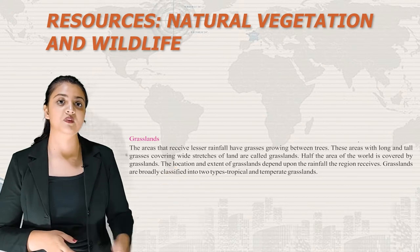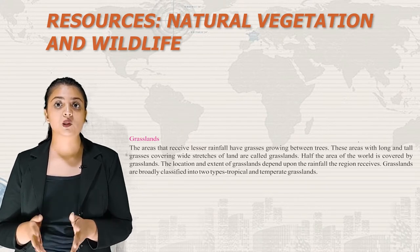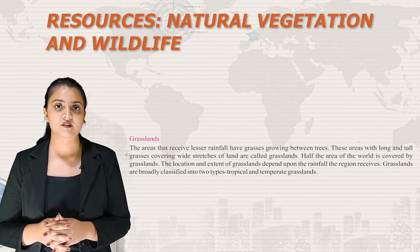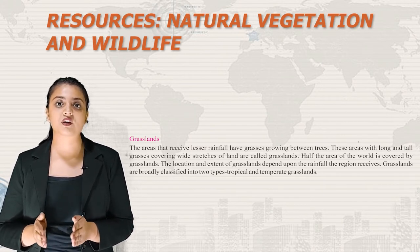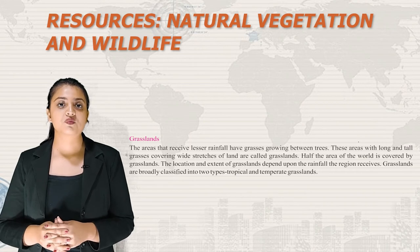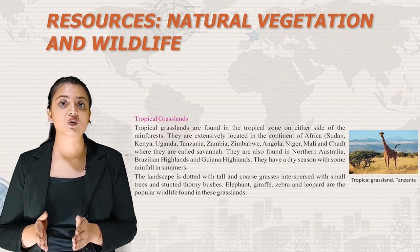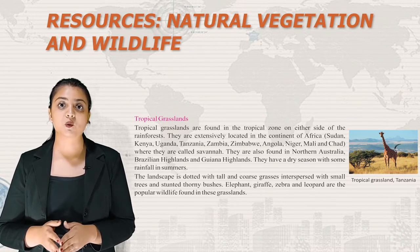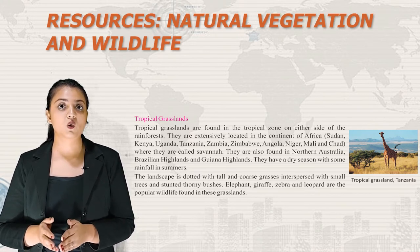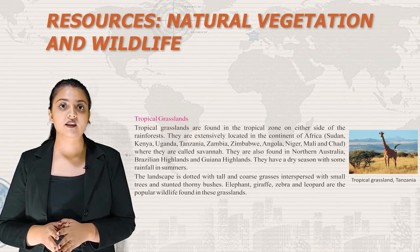Areas that receive lesser rainfall have grasses growing between trees. These areas with long and tall grasses covering wide stretches are called grasslands, and half the area of the world is covered by them. Grasslands are broadly classified into tropical and temperate types. Tropical grasslands are found in the tropical zone on either side of the rainforest, extensively in Africa (Sudan, Kenya, Uganda, Tanzania, Zambia, Zimbabwe, Angola, Niger, Mali, Chad) where they are called savannah, and also in northern Australia and Brazilian highlands. They have a dry season with some summer rainfall, and elephants, giraffes, zebra and leopards are popular wildlife.